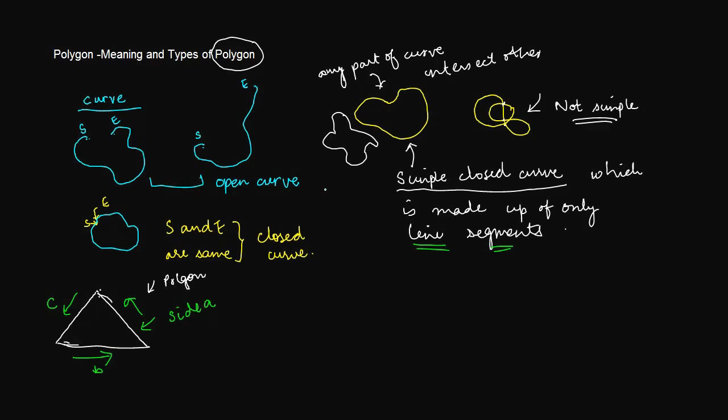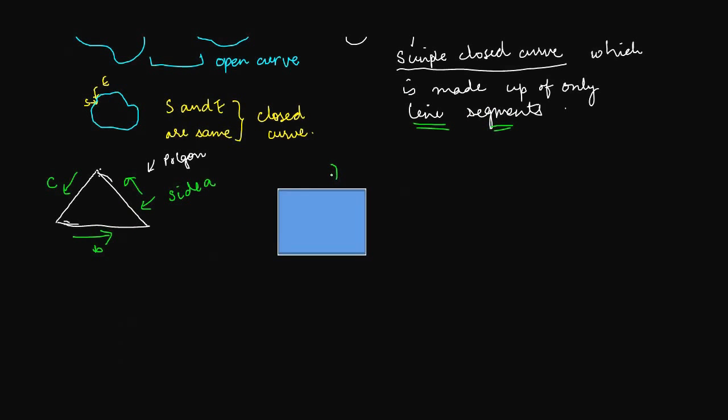Let us take another example. Let us take the case of a quadrilateral. So something with four sides is known as a quadrilateral. Again this is a polygon. It has four sides. It is made up of four sides, one, two, three, four.